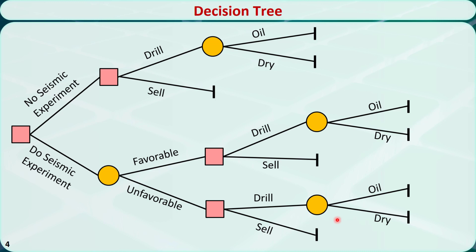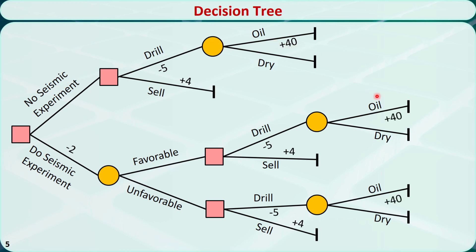We need to put specific numbers on specific branches. The cost of doing the seismic experiment is $2 million, so we put negative 2 here. The cost of the drilling operation is $5 million, so we put negative 5 for each branch marked as drill. The company will earn $4 million by selling the land, so we put positive 4 for each branch marked as sell. If oil is found, the company will earn $40 million, so we put positive 40 for every branch marked as oil.